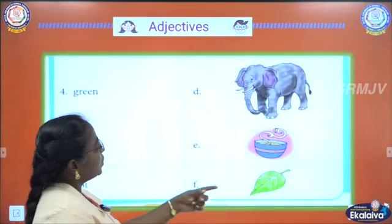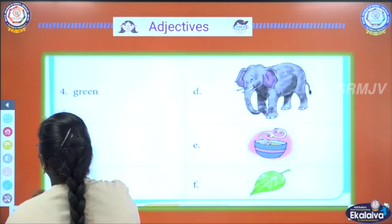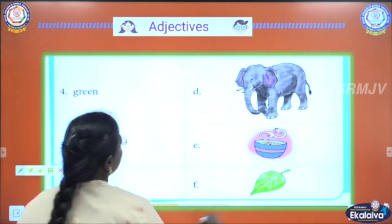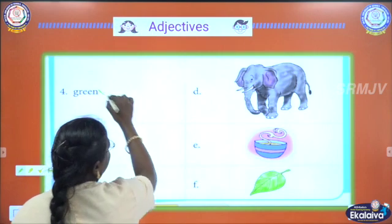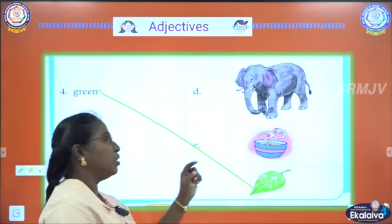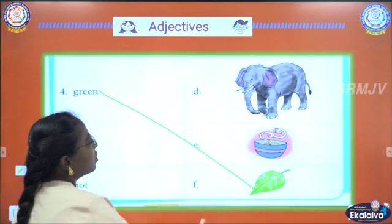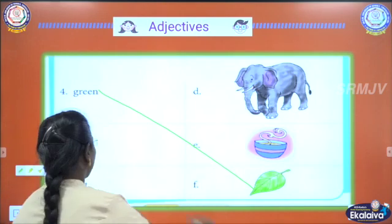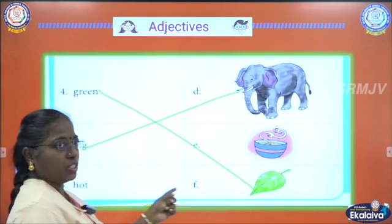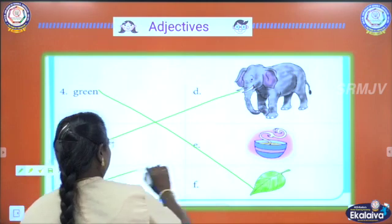And green — which is green here? The leaf is green. Green is adjective and leaf is noun. Then match the picture. Big — which is big here? Elephant is big. So match big elephant. Hot — which is hot? Hot coffee. Here, hot.